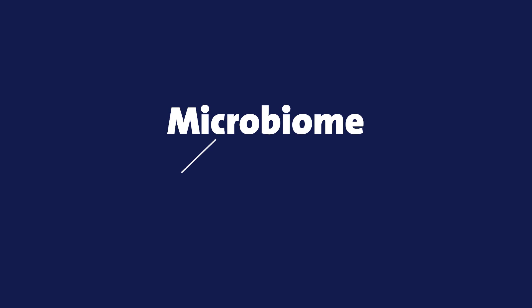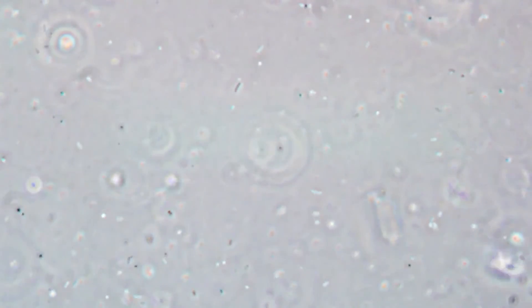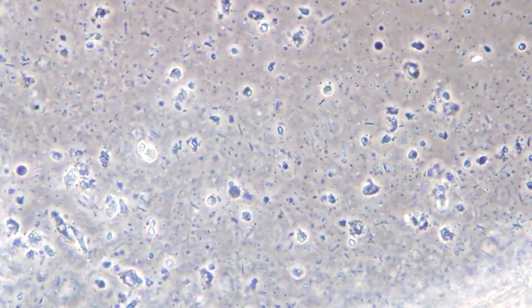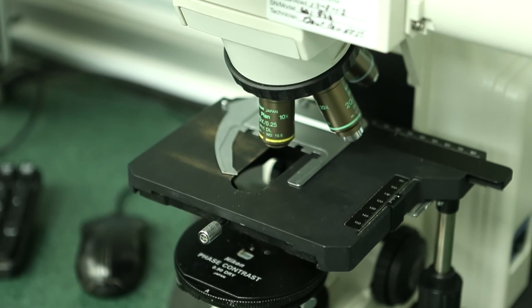A microbiome — if you break down that word, micro means tiny, bio is living, and ome is community. So we're talking about microscopic little communities. These are organisms that are everywhere, and we don't think about them because we can't see them unless you use something like this — a microscope to look at microbes which live in microbiomes.